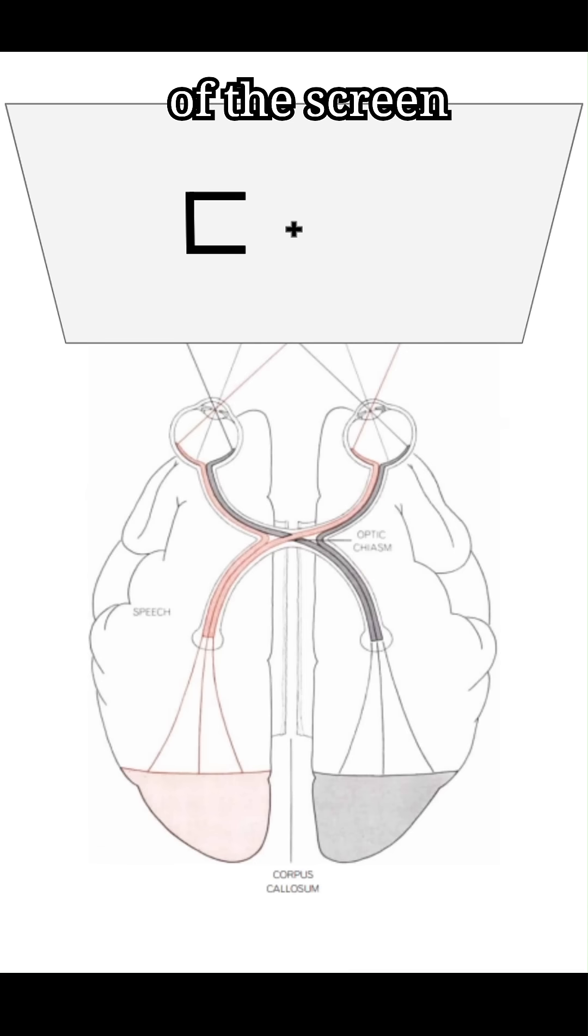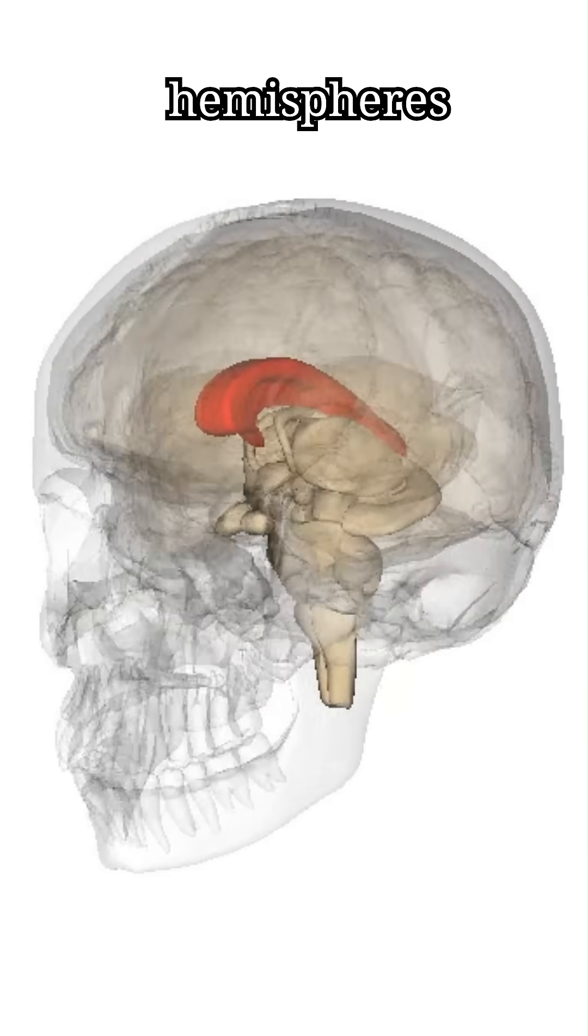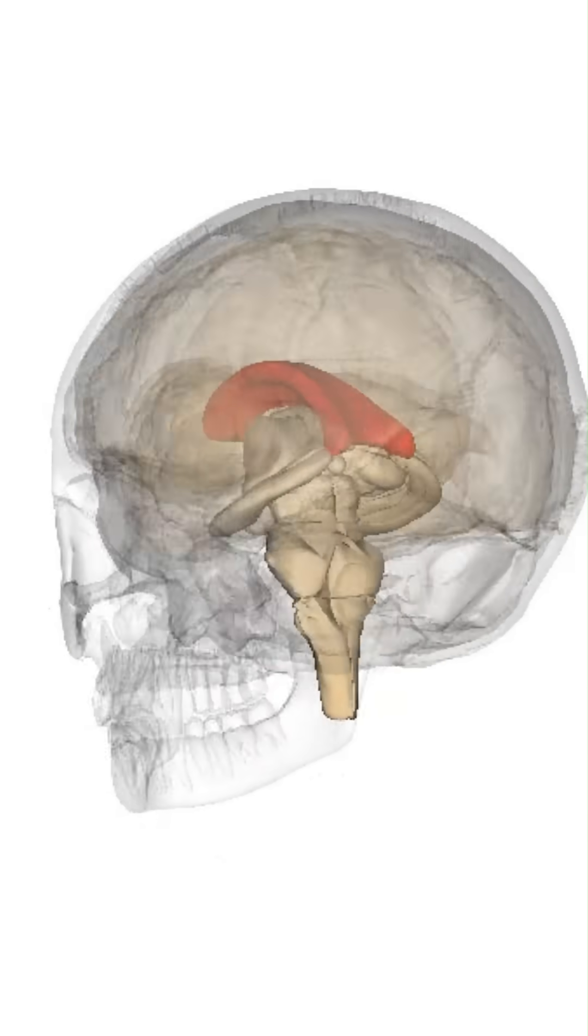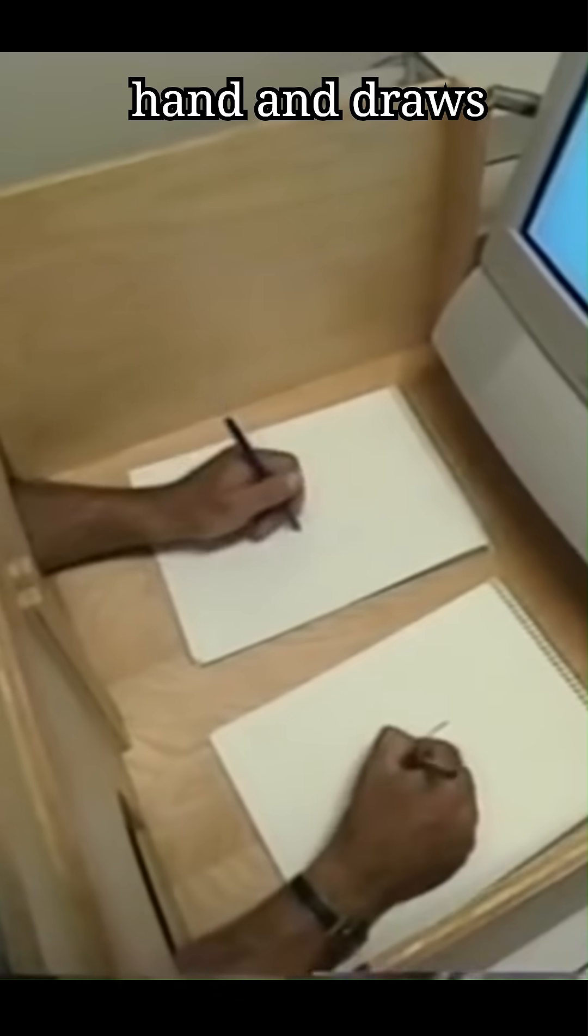The image on the left side of the screen goes to the right hemisphere, and the image on the right side goes to the left hemisphere. And since the two hemispheres can no longer communicate, each one takes control of one hand and draws what it saw.